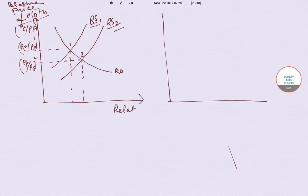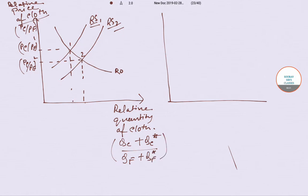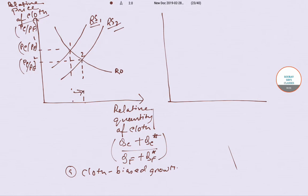The horizontal axis represents the relative quantity of cloth, given as QC plus QC-star divided by QF plus QF-star. This diagram shows cloth biased growth — there is an increase in the relative quantity of cloth, and the price has also decreased. This is cloth biased growth.